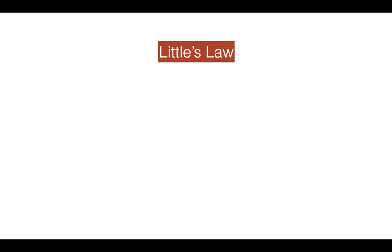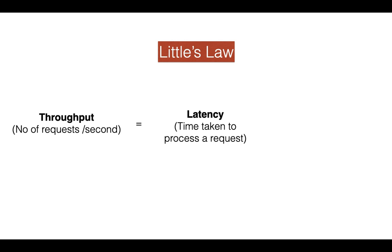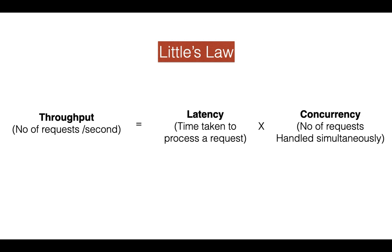The scalability of server applications is governed by Little's Law, which relates throughput, latency, and concurrency. Throughput — the number of requests per second an application can process — is directly related to latency, or the time taken to process the request, times concurrency, or the number of requests a system can handle concurrently. For example, if it takes our app one second to process a request and we have 10 OS threads, meaning we can launch 10 requests concurrently, then our throughput is 10 requests per second.